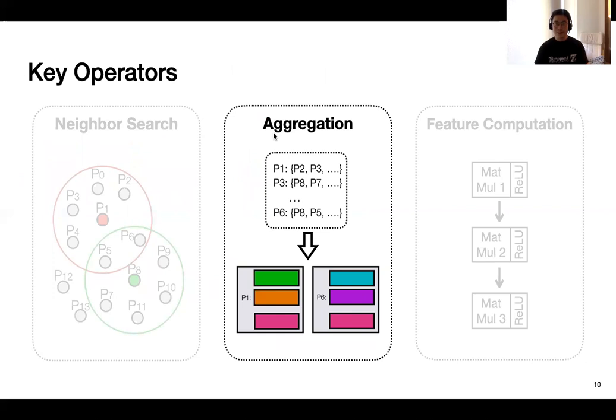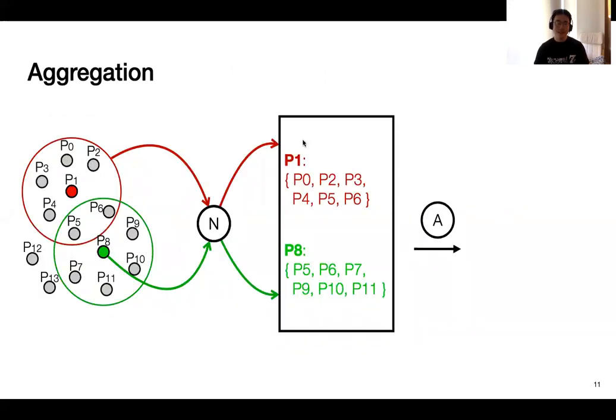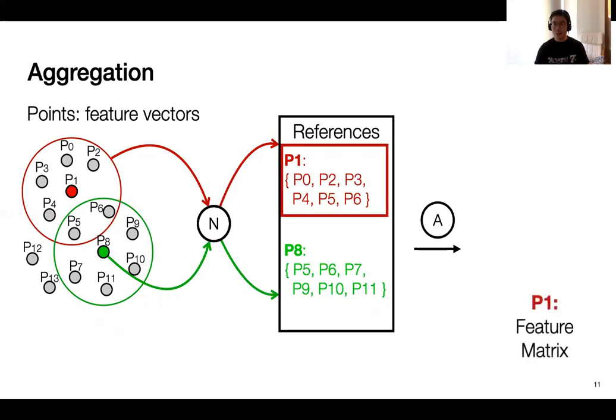And the second operation is aggregation. Here, as a reminder, all these points are essentially feature vectors. And also remember that the previous operation neighbor search finds all the information of neighbors. They are essentially just groups of references to the actual data points. So what aggregation really does here is to use those groups of references to access the memory and get the actual feature vectors. And then it will do some post-processing and aggregate them together.